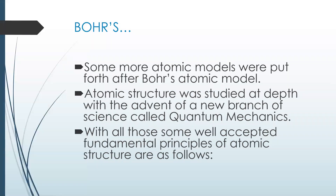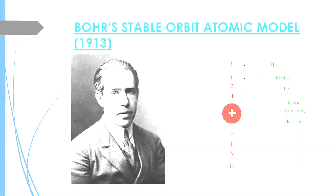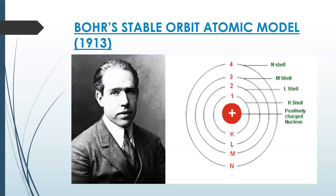Some more atomic models were put forth after Bohr's atomic model. Atomic structure was studied in depth with the advent of a new branch of science called quantum mechanics. This is the image of Bohr's stable orbit atomic model. He was a great scientist. His atomic model shows a positively charged nucleus in the center, and shells 1, 2, 3, 4, named as K shell, L shell, M shell, and N shell respectively.